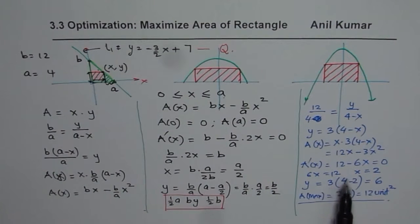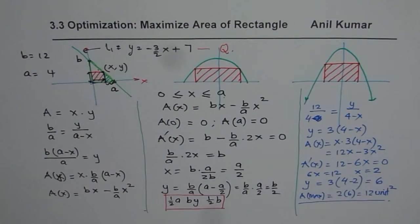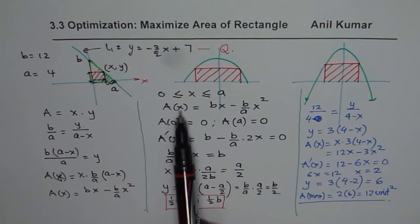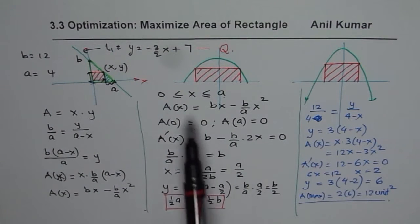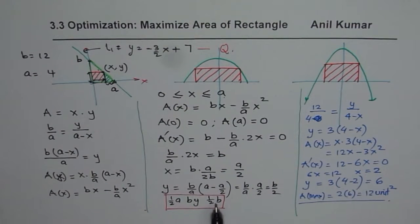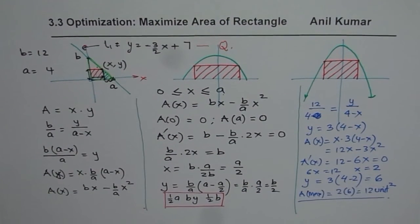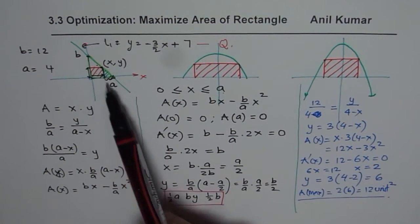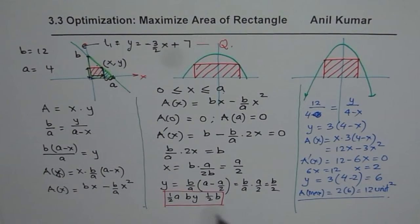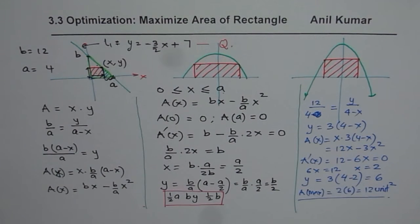I hope you've understood the strategy clearly. Use similar triangles to relate x and y. Once you find the relation, write the area in one variable, find the derivative, and equate it to zero. Since the area at both boundary conditions is 0, whatever area you get at the critical number is the maximum. In most cases where a line and a rectangle are involved, the dimensions will be half of the x-intercept and half of the y-intercept. I hope it really helps. Thank you and all the best.